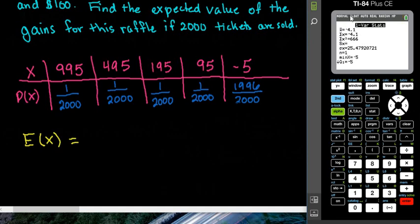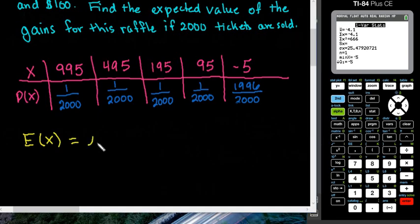An x-bar, remember, is the calculator's way of notating the mean. Even though we are dealing with a probability distribution, and this is mu, we know that the expected value is equal to mu. The calculator, like I've said in other videos, it does not change it to mu just because it's a probability distribution. So you have to remember which symbols to use, because your calculator always uses x-bar.